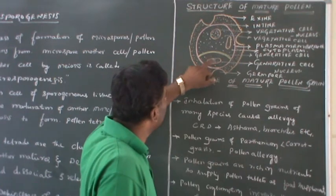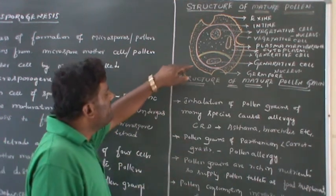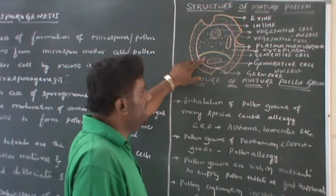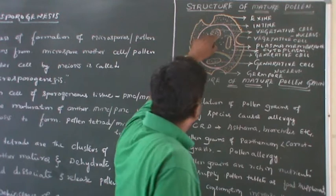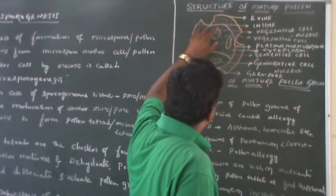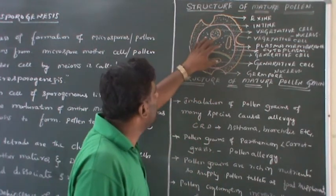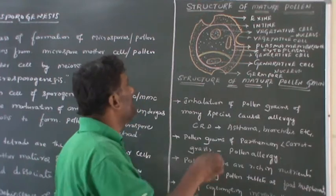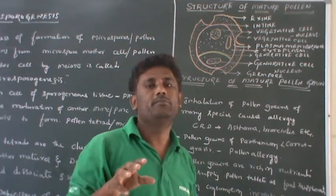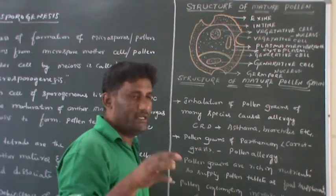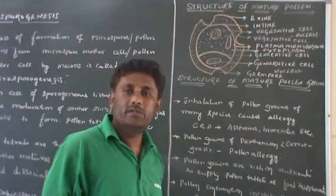The cytoplasm of the pollen grain is differentiated into two different cells. The smaller cell is known as the generative cell and the bigger one is known as the vegetative cell. In the vegetative cell there will be presence of a nucleus, and that nucleus is considered as the vegetative cell nucleus or vegetative tube nucleus. This vegetative cell nucleus helps in the formation of the pollen tube during germination — the formation and germination of the pollen tube is under the influence of the vegetative cell nucleus.